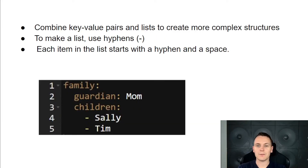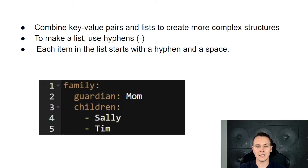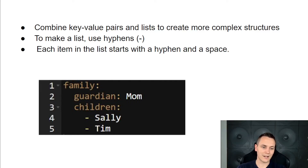You can also combine key-value pairs and lists to create more complex objects. We need to use a hyphen to create a list. Each item in the list starts with a space and a hyphen. If you look at our family parent object, we have added another child element called 'children' which consists of two elements in the list.